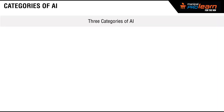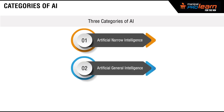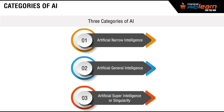AI has been classified into three categories today: Artificial Narrow Intelligence, which is where we are today; Artificial General Intelligence; and the ultimate, Artificial Super Intelligence, or Singularity, as it is sometimes referred to.